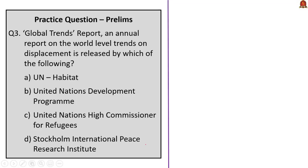The third question: the Global Trends Report, an annual report on world-level trends on displacement, is released by which of the following? This Global Trends Report is released by the United Nations High Commissioner for Refugees. So the answer for this question is option C.